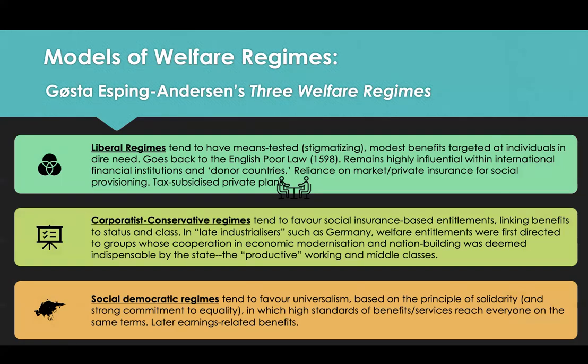Among the main criteria for classification that Esping-Andersen used are: A, decommodification — the idea that the degree of access to social provisioning is based on social rights linked to citizenship or residence and the elimination of market dependence for welfare provisioning; B, social stratification — the welfare regime is not merely a reflection of social stratification, but can deepen or reduce it; and C, the extent of the state-market-family mix in the organization of welfare provision.